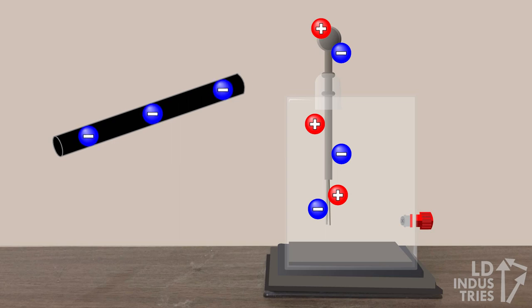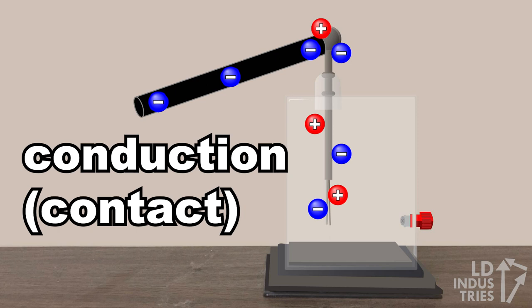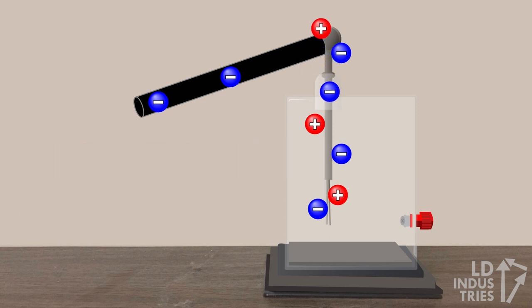When the negative rod touches the electroscope, conduction occurs. Conduction occurs when there's contact between charged and neutral objects. This allows some of the electrons from the negative rod to move into the electroscope.